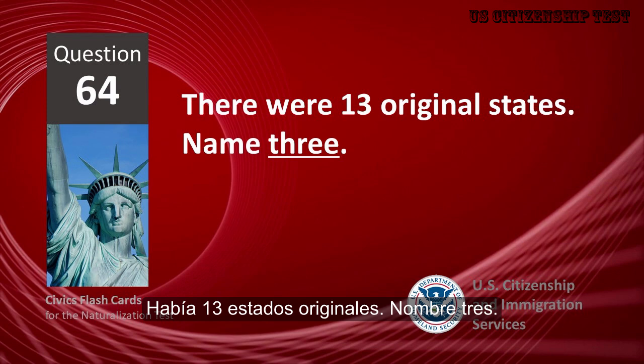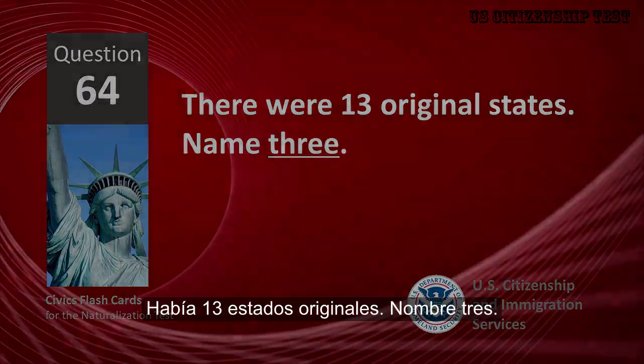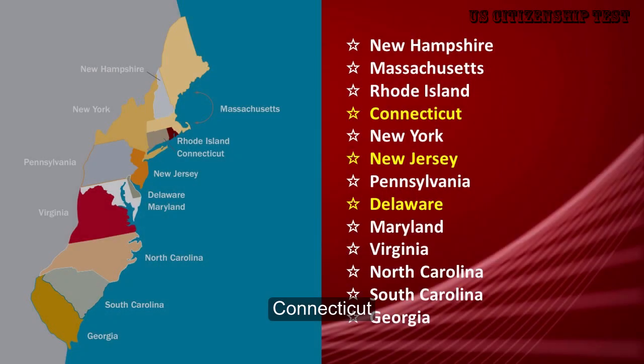There were 13 original states. Name three. New Jersey. Delaware. (Note: 'United States' appears in the transcript in place of a third state name, likely a recognition error.)